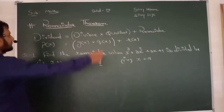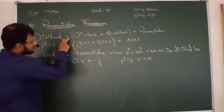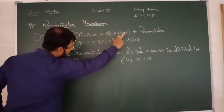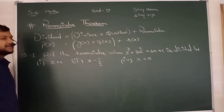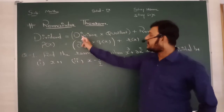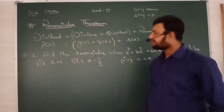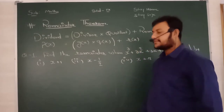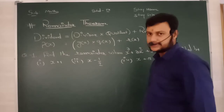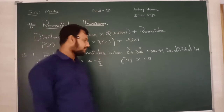Okay, let us see the Remainder Theorem. What does the theorem say? The Remainder Theorem says: Dividend equals Divisor into Quotient plus Remainder. This theorem states that Dividend equals Divisor multiplied by Quotient plus Remainder. Now you can understand - what is dividend, which is divisor, which is quotient. Dear students, let us take a simple example.